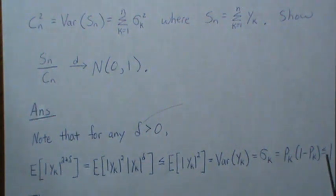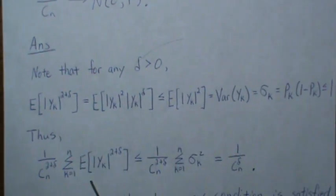We're calling sigma k, which is pk(1-pk), which is of course less than or equal to one.